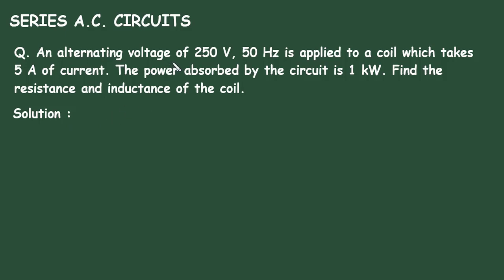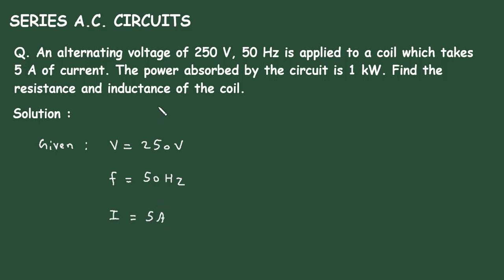Solution. First of all, let's write what is given. The value of alternating voltage is given, so V is equal to 250V. The value of frequency is given, F is equal to 50Hz. The value of current is given, so I is equal to 5A. The power absorbed by the circuit is 1kW, so P is equal to 1000W. We have to find resistance R and inductance L.